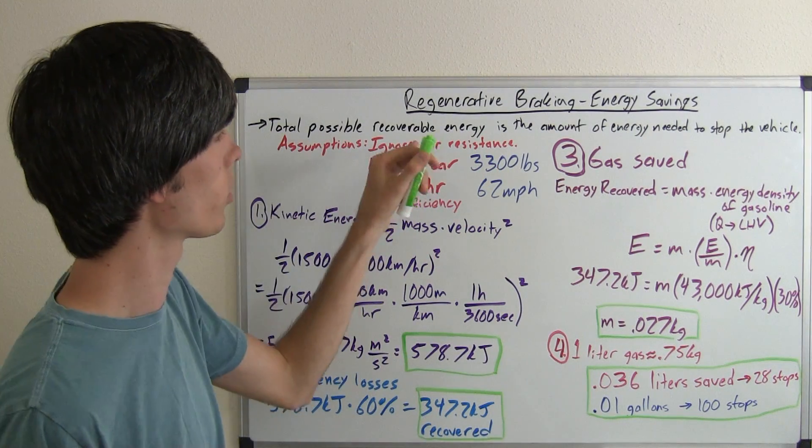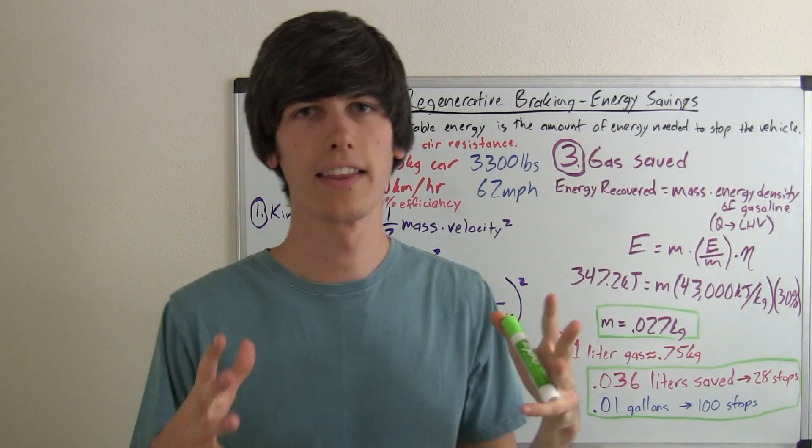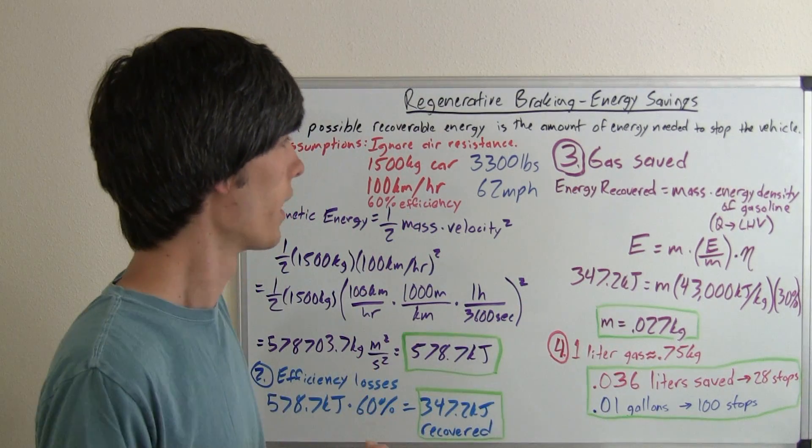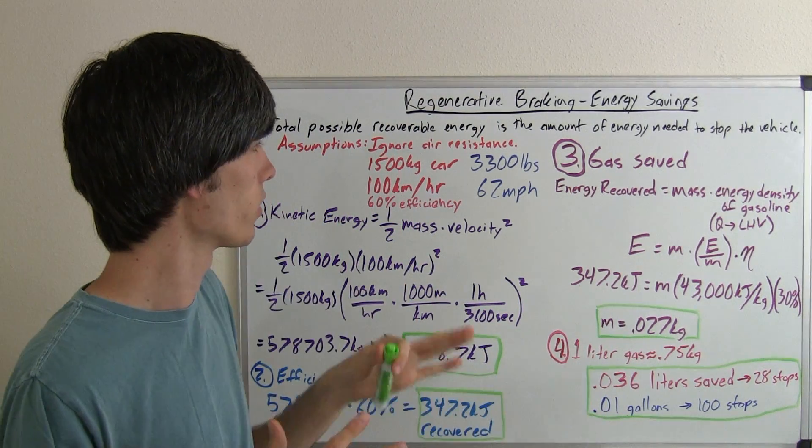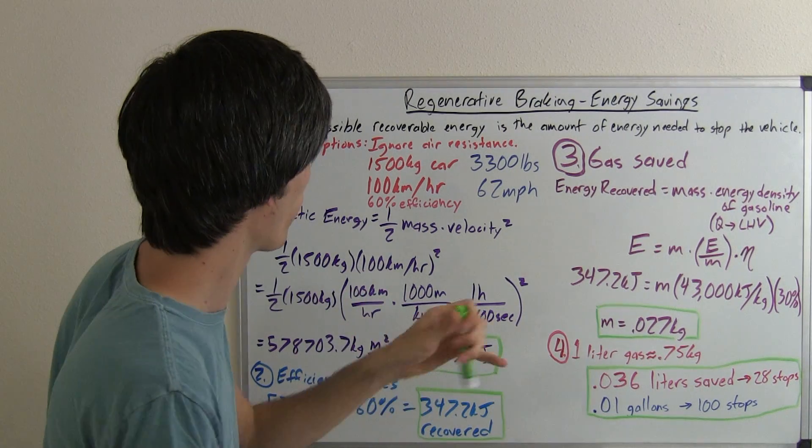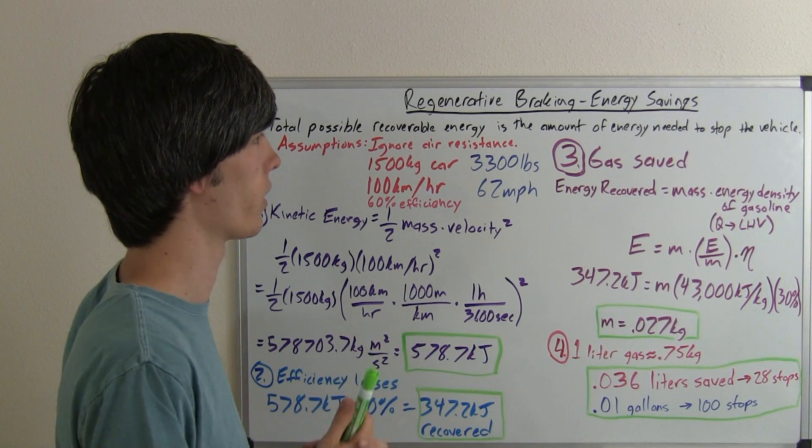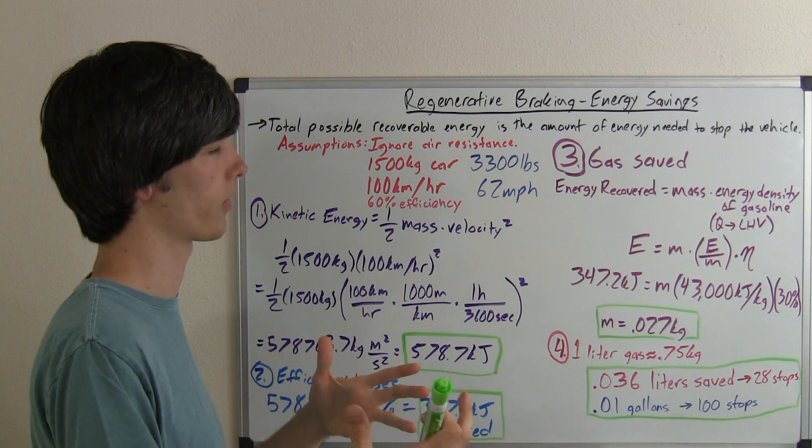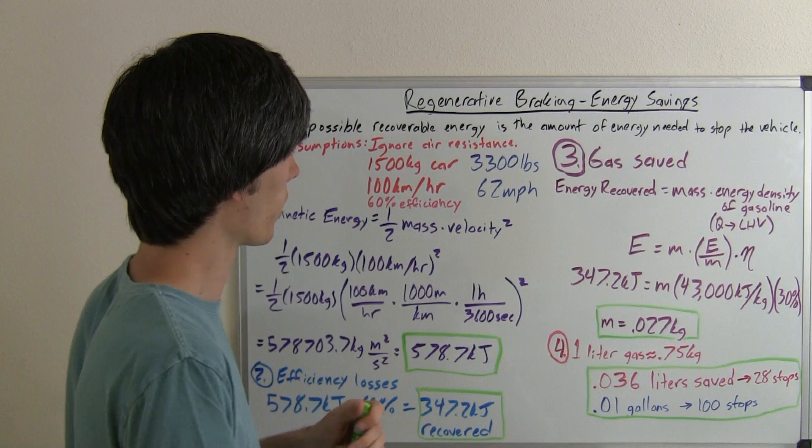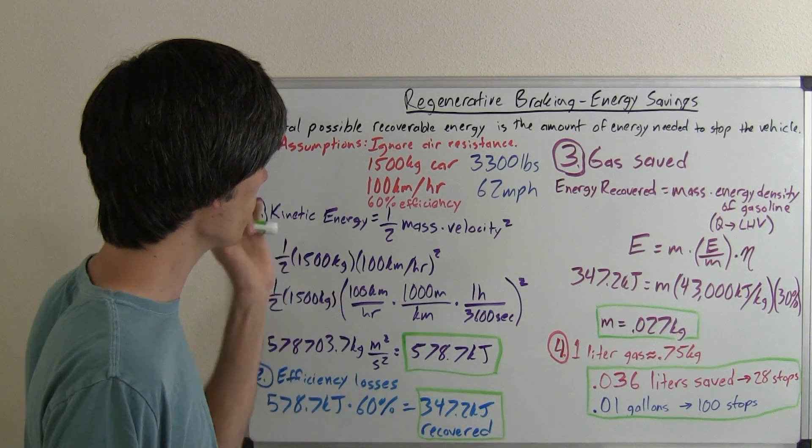The total possible recoverable energy is the amount of energy that is needed to stop the vehicle. Now for this example, we're going to ignore air resistance just to simplify it, but basically air resistance would decrease the total amount of energy because air resistance is going to slow your vehicle down some. Your brakes aren't going to do all of the work, but we're going to ignore that.